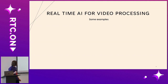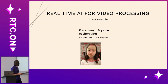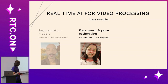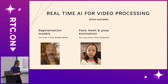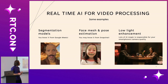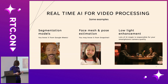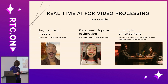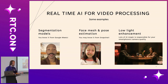Let me go over some examples of how real-time AI is already used for video processing. You all know face mesh and pose estimation from Snapchat — this is not a new technology. You're probably familiar with segmentation models from conference calls. If you've ever used a virtual green screen on Microsoft Teams or Google Meet, this is AI working in the background. Your smartphone camera also has a lot of AI magic responsible for your pictures looking crisp, with low-light enhancement working in the background.